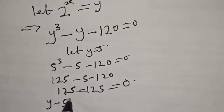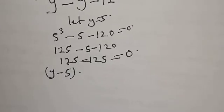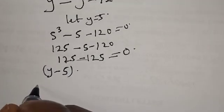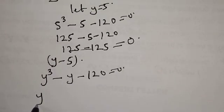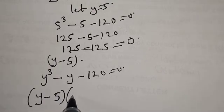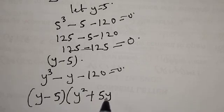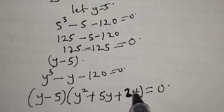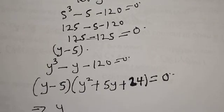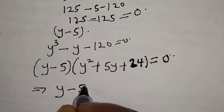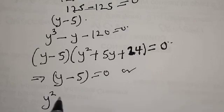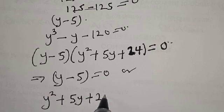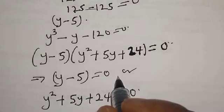Therefore y minus 5 is one of the roots. From y raised to power 3 minus y minus 120 equals 0, we factor as y minus 5 multiplied by y squared plus 5y plus 24 equals 0. We now have two cases.